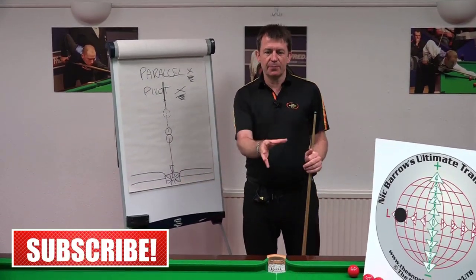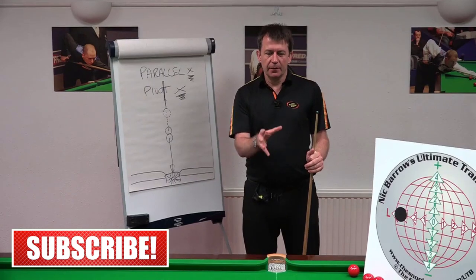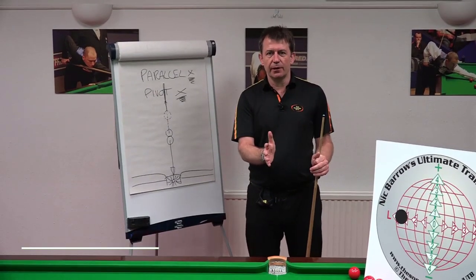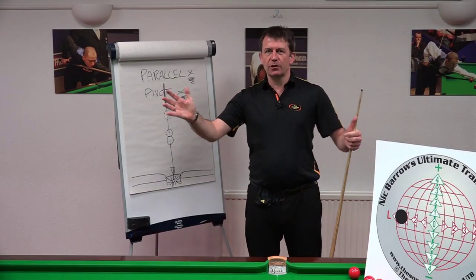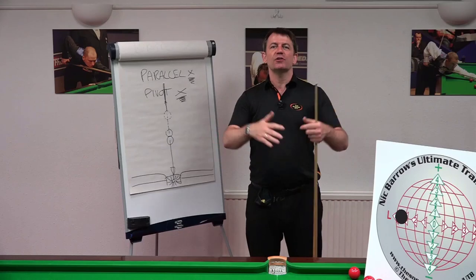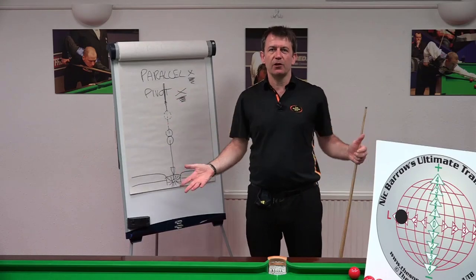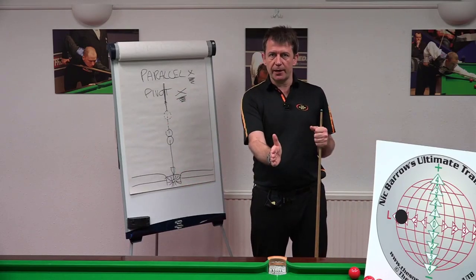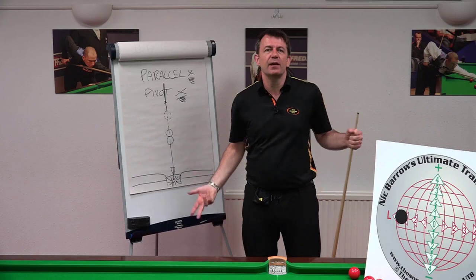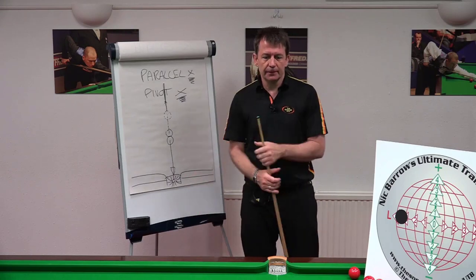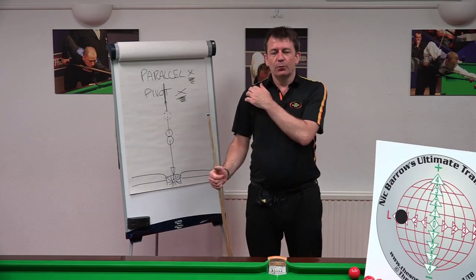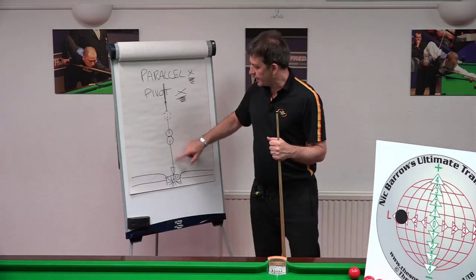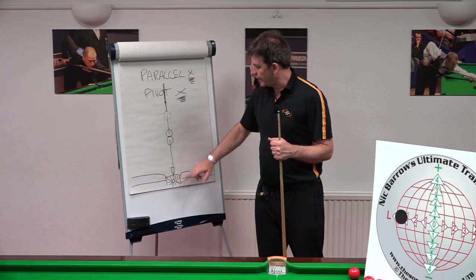We learn to walk by trial and error until you can't explain how you walk — you just do it. That's the same as aiming. Pros practice by trial and error with a straight delivery, observing the result until it's just obvious where the object ball wants to go for a given cue ball line of aim. Now, what is the pivot system?